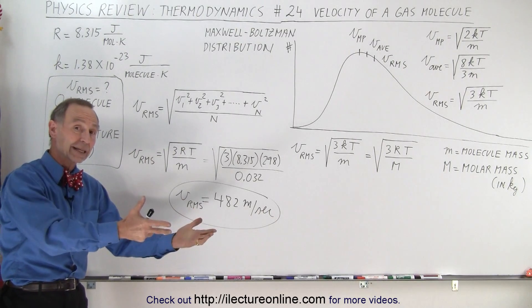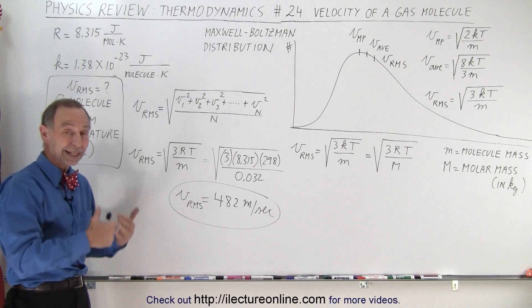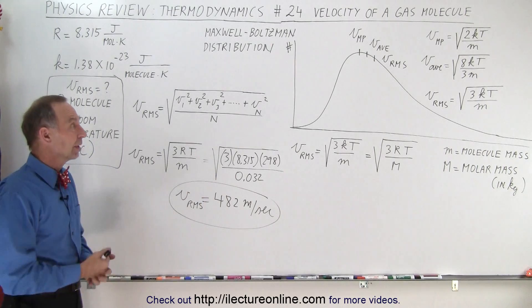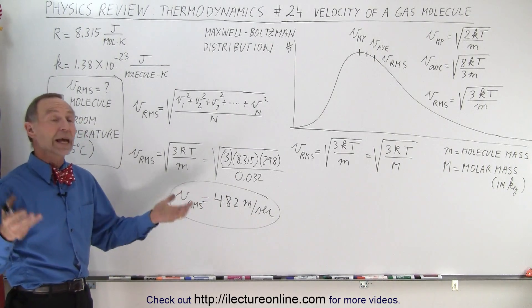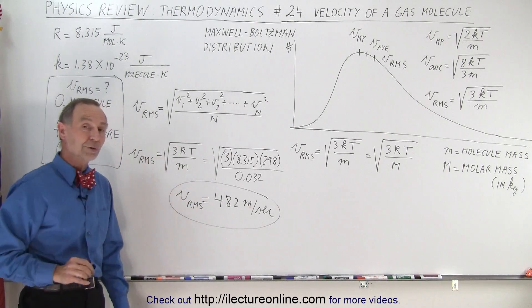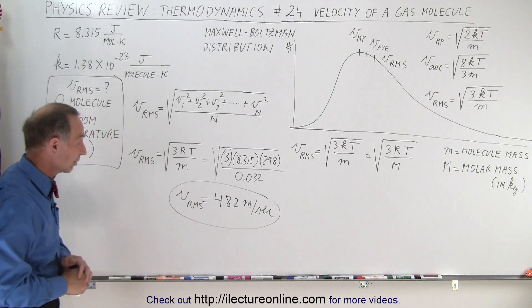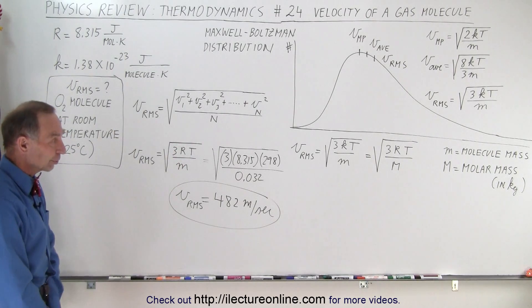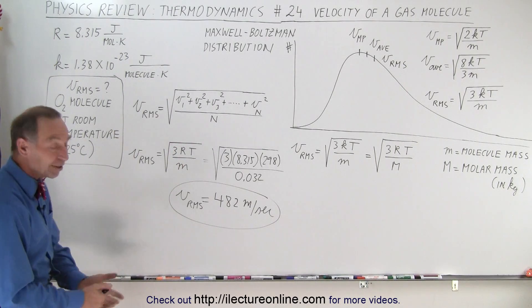Some will contribute more to the kinetic energy, some will contribute less, but if you take this velocity, the kinetic energy of the whole gas can be found by taking the kinetic energy of an RMS molecule, so to speak, or the velocity of the RMS velocity of a molecule, and simply multiply times the number of molecules. And that is how it's done.